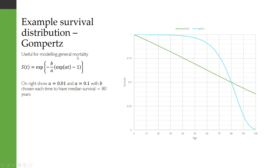Let's have a look at a survival distribution. This is the Gompertz distribution, which is useful for modeling general mortality. This is its survival function. On the right, we have two different Gompertz distributions. They both have the same median survival, which is 80.